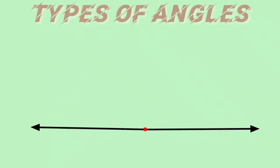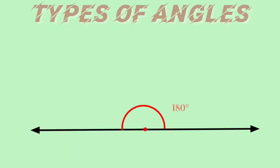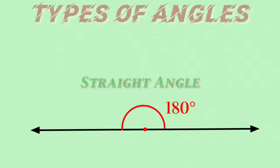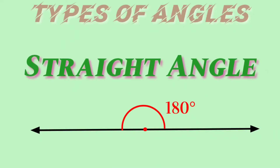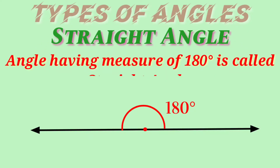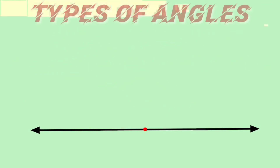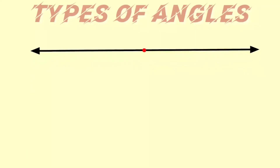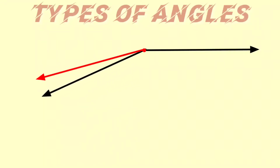If we place the second arrow in the opposite direction, we get a straight line. When the two arrows point in exactly opposite directions, we have a straight angle.